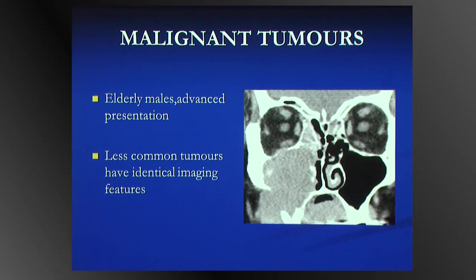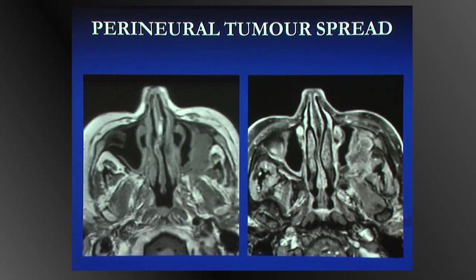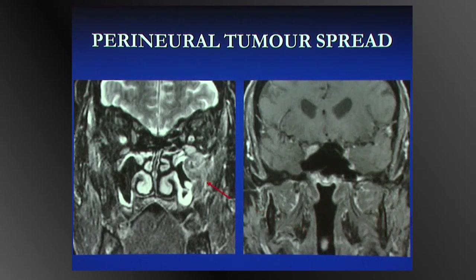Malignant tumours tend to have the same pattern: a destructive solid soft tissue mass. The vast majority — more than 80% — are squamous cell carcinomas, and the problem is they present late. On CT you can see features such as a fuzzy infraorbital nerve. MR is then essential. Always look critically and actively for perineural spread, involvement of the orbit, brain, and dura. V2 involvement is an important finding. If we suspect tumour on CT, even if we're wrong, it's probably a good idea to do MRI.